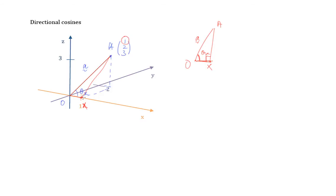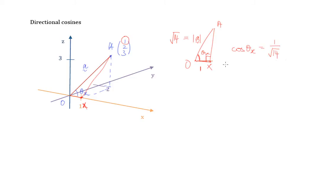OX is basically 1, because it is one unit of your x. And the length OA, which is the hypotenuse side of this right-angle triangle, is the magnitude of vector A — which is √(1² + 2² + 3²) = √14. So cosine theta x will be 1 over √14. We can then find theta x pretty easily, just by taking cosine inverse.